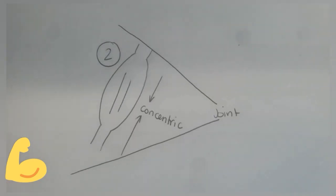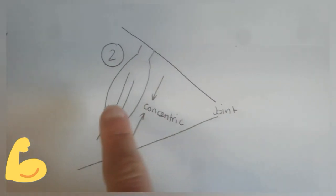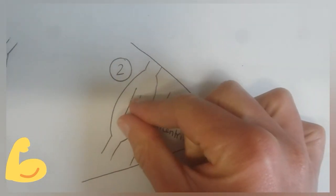Step number two, know which action is happening at the joint when the muscle contracts concentrically. Concentrically means that the muscle gets shorter.